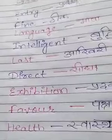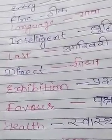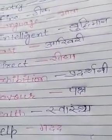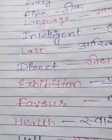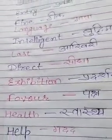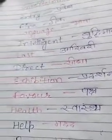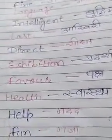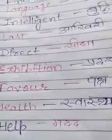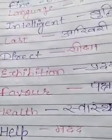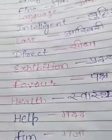Direct means siddha. Exhibition means pradarsni. In school, on the day of a science exhibition, you see many exhibitions, many pradarsnis set up. Next is favor. Favor means paksh — speaking in favor of someone. Like if Ram hit Shyam, someone takes Ram's side and says Ram did not hit Shyam. That is favor.